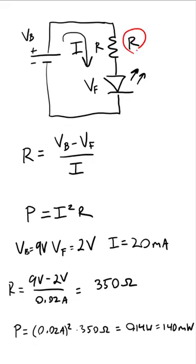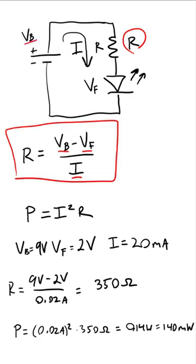To find the current limiting resistor value for an LED, you can use the equation R equals VB minus VF over I, where VB is the battery voltage, VF is the forward voltage drop of the LED, and I is the desired current.